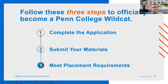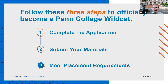Step three is meeting placement requirements — demonstrating proficiency in English and math for your selected major. If you haven't taken the SAT or ACT, that's completely fine. We are a test-optional school. You can take our own free placement test, available online or in person at our testing lab on campus. If your English and math skills aren't exactly where they need to be, we'll work with you to schedule an additional class or remediation strategy. Once you've completed all three steps, you'll officially become a Penn College Wildcat.